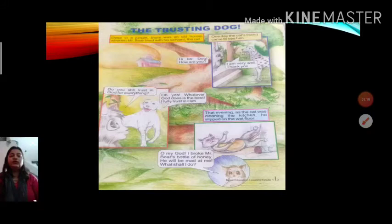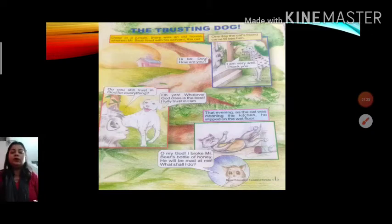Story name is The Trusting Dog. Once upon a time, deep in a jungle, there was an old house wherein Mr. Bear lived with his servant, the cat. One day, Mr. Cat was cleaning the kitchen in Mr. Bear's house. Suddenly, he fell down and broke the jar of honey and that was the precious jar of Mr. Bear's. He was totally scared and he said these all things to the dog, Mr. Dog, because Mr. Dog was the friend of Mr. Cat.